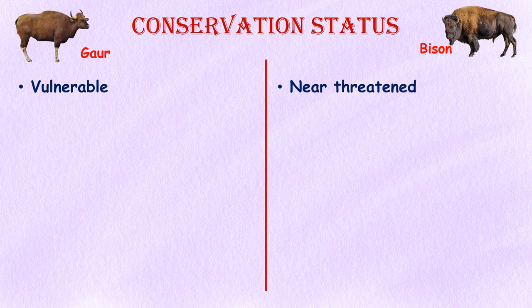Conservation Status: The Indian gaur is listed as Vulnerable by the International Union for Conservation of Nature due to habitat loss and hunting. The American bison was once on the brink of extinction but has made a remarkable recovery and is currently listed as Near Threatened by the IUCN.